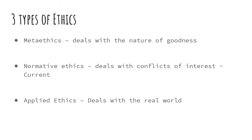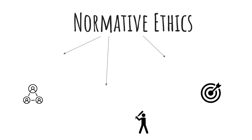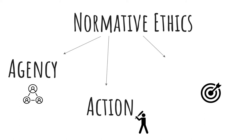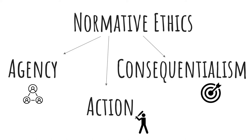At the end of the semester we'll deal with applied ethics, which takes into consideration the theories we learn in both normative and metaethics and applies them to real-world situations. Right now in normative ethics we've talked about agency-based ethics, which focuses on the individuals in a situation. Today we'll be talking about action-based ethics, which is deontology, and of course we looked at consequentialism at the beginning of the semester.